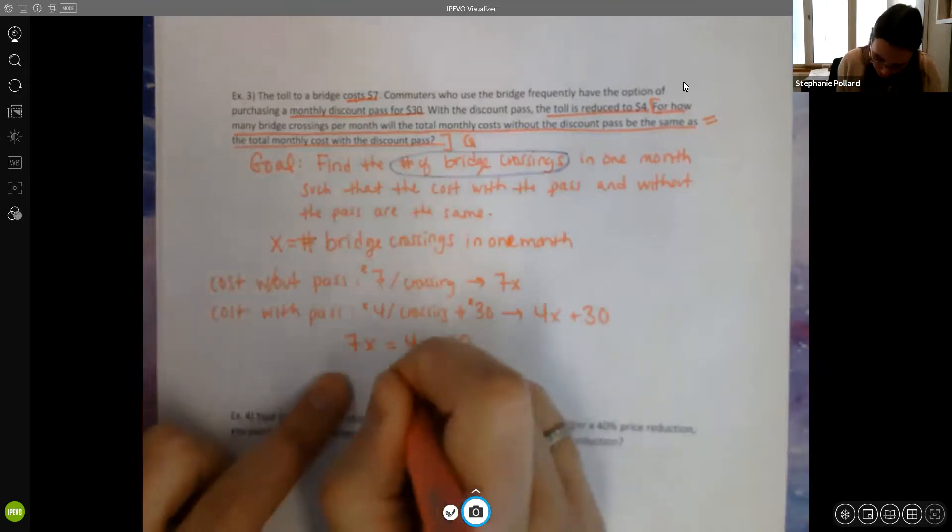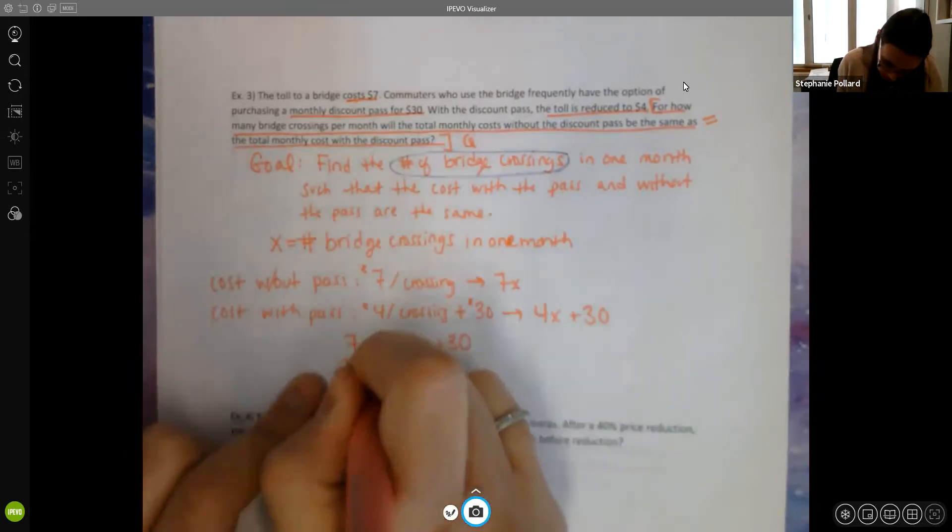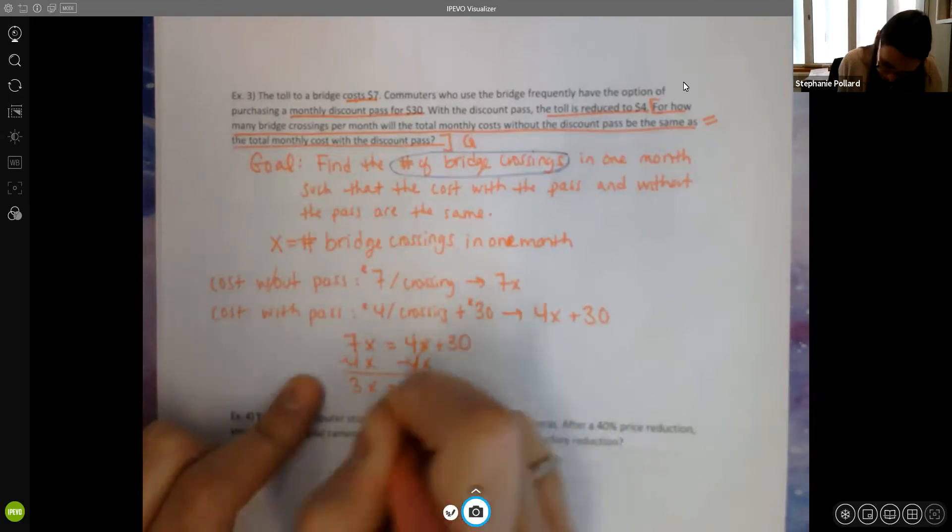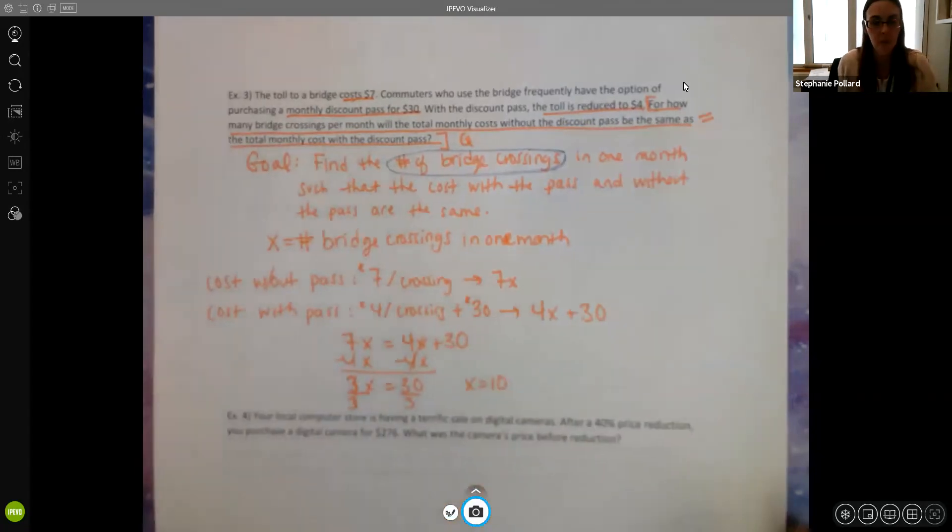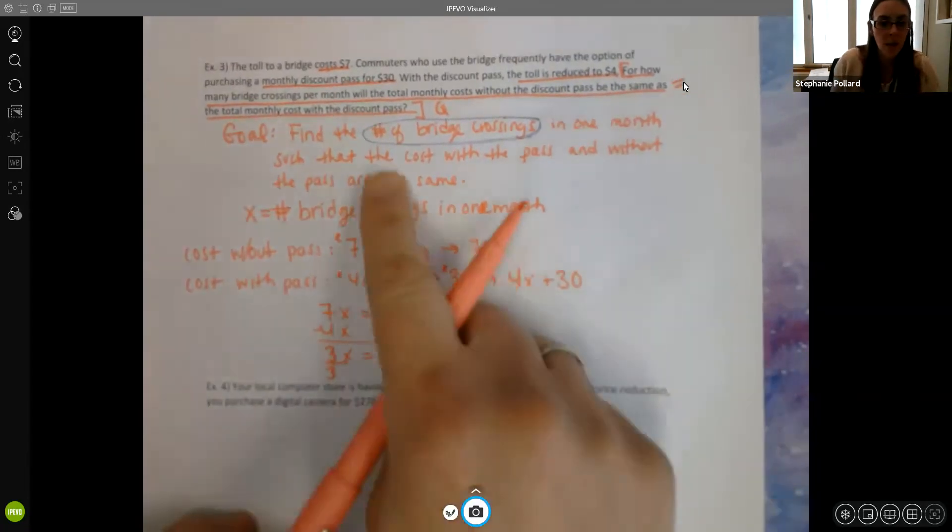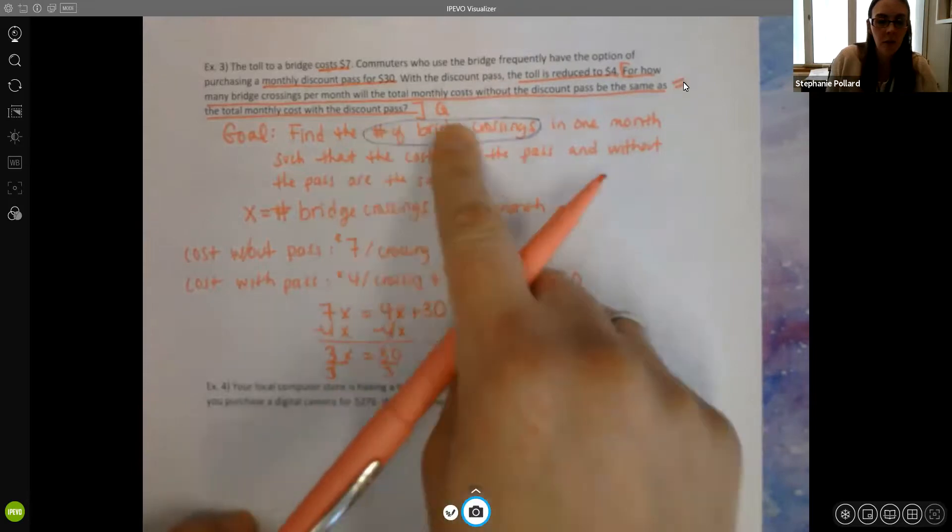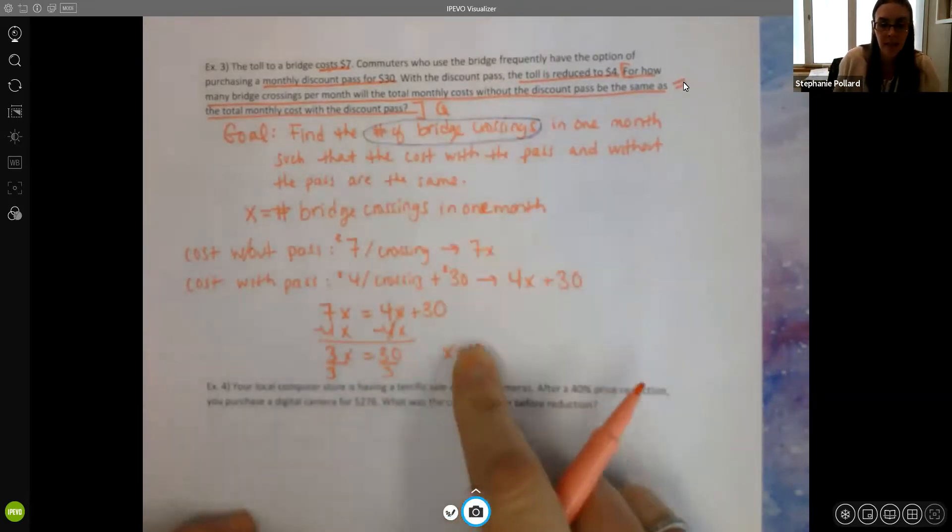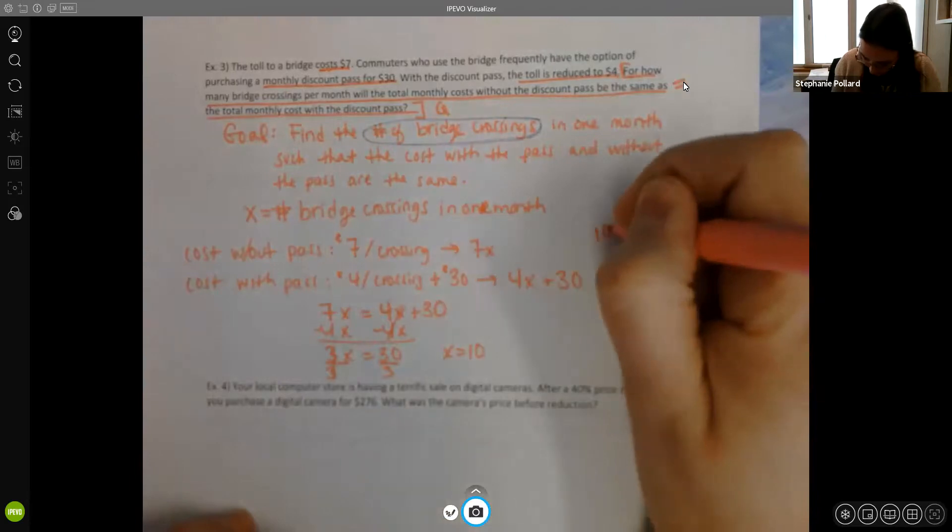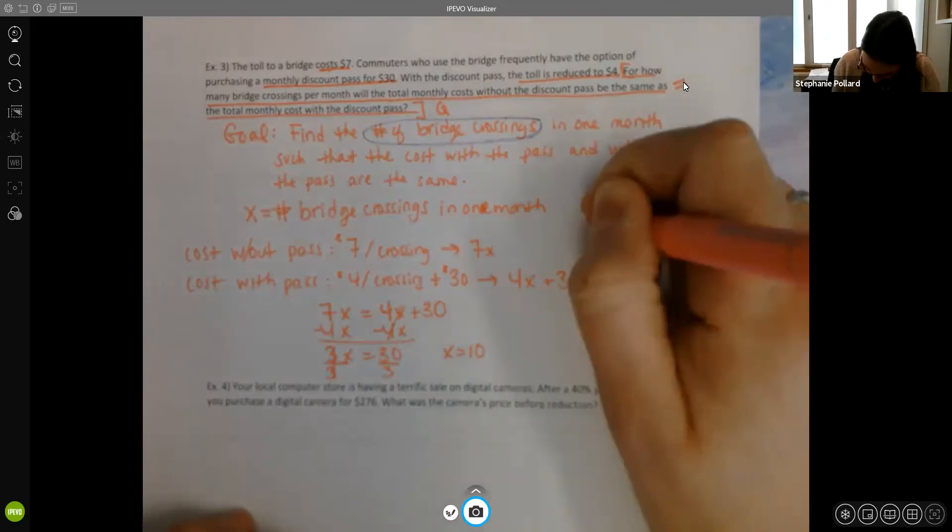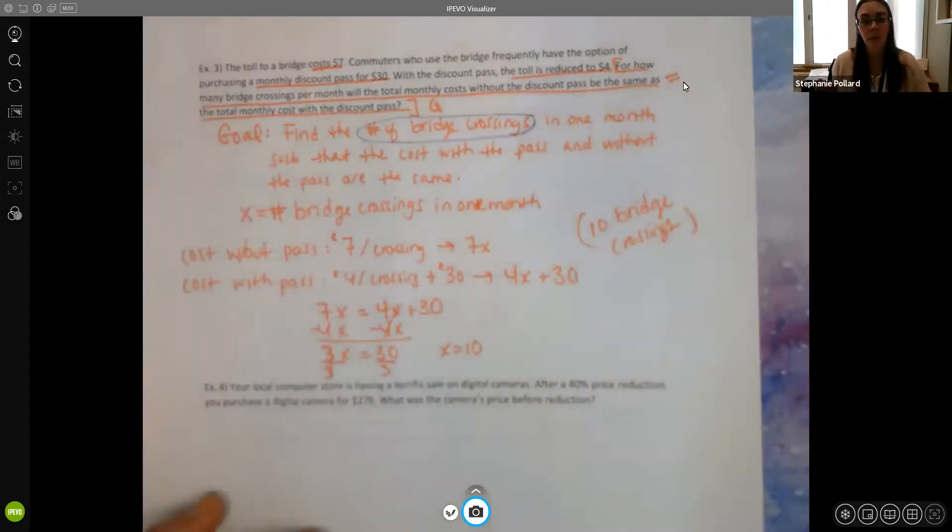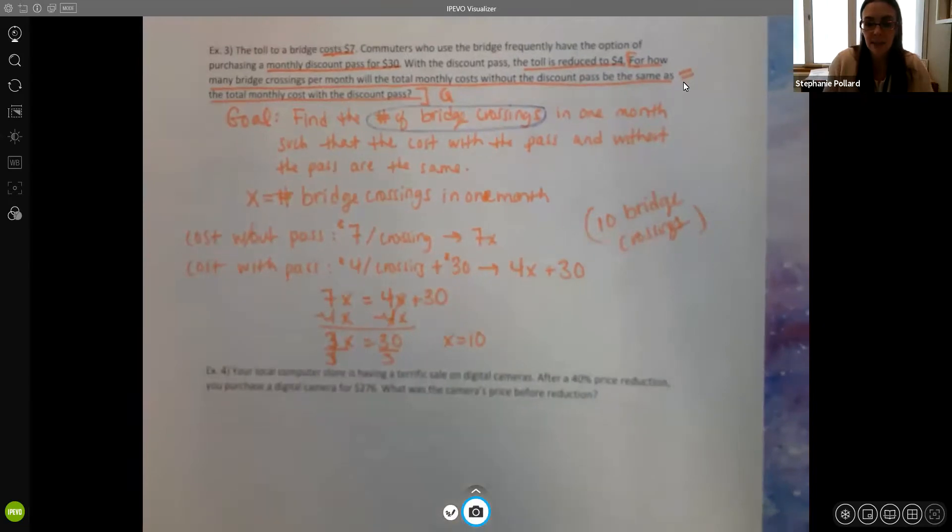So I'm going to get my variables together. I'm going to bring my 4x to the other side, which gives me 3x equals 30. And I'm going to solve that by dividing by 3, and I get x equals 10. So go back to your question. The number of bridge crossings would have to be 10. So 10 bridge crossings per month would give us the same cost.